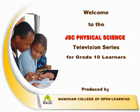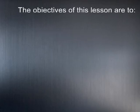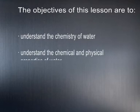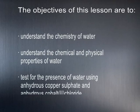Good day! Welcome to the first lesson of JSC Physical Science in a series of two lessons. The topic of this lesson is Properties of Water and the Test for Water. The objectives of this lesson are to understand the chemistry of water, understand the chemical and physical properties of water, and test for the presence of water using anhydrous copper sulphate and anhydrous cobalt-2 chloride.